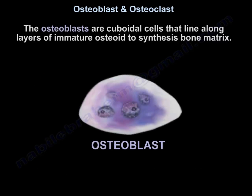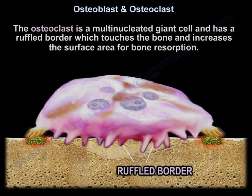The Osteoplast are cuboidal cells that line along layers of immature osteoids to synthesize bone matrix. The Osteoclast is a multi-nucleated giant cell, with a ruffled border which touches the bone and increases the surface area for bone resorption.